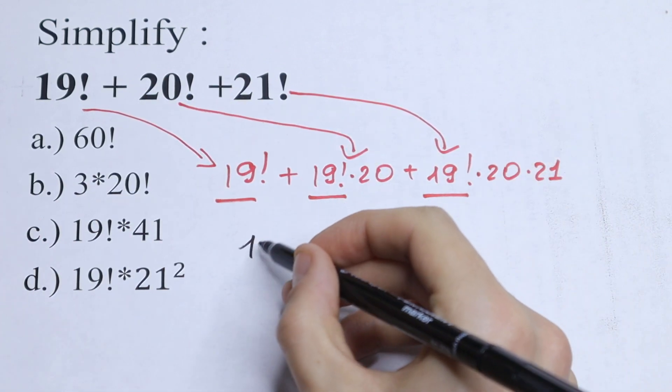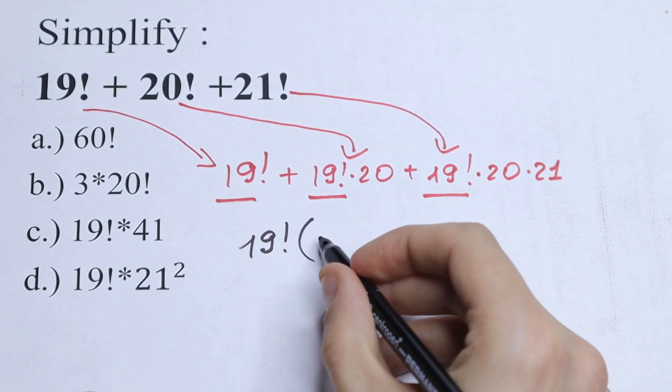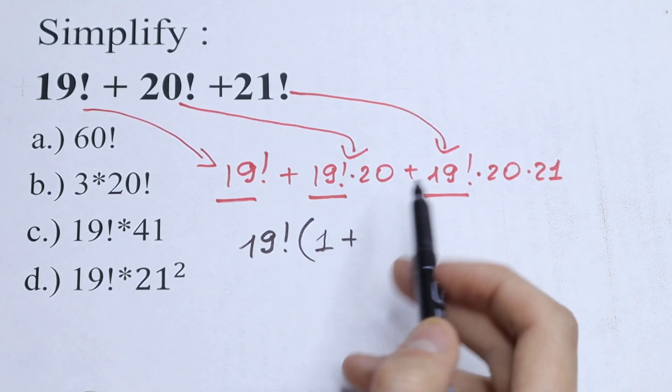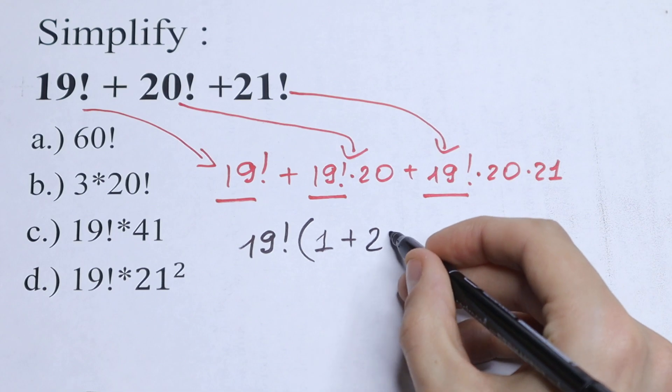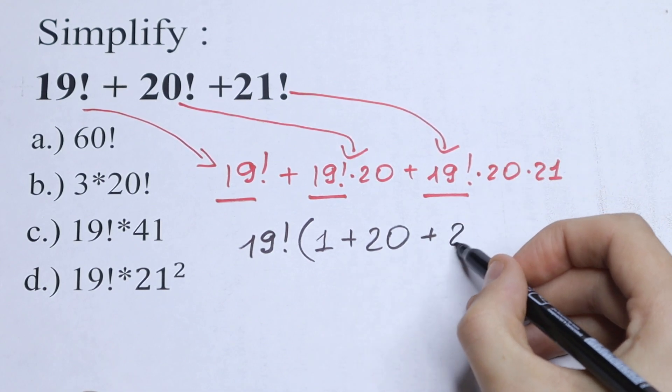We will have 19 factorial, and in parentheses we will have from here only one, plus from here we will have only our 20, and from here we will have only our 20 times 21.